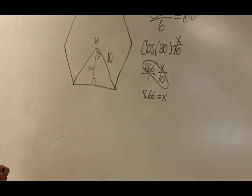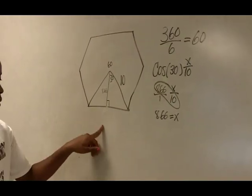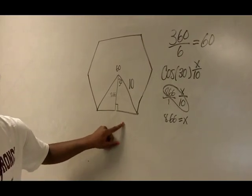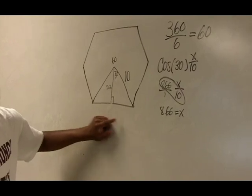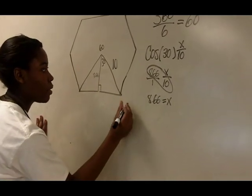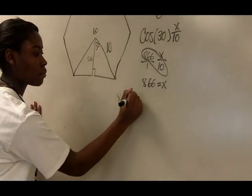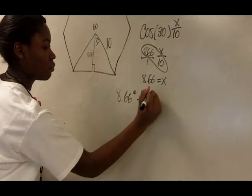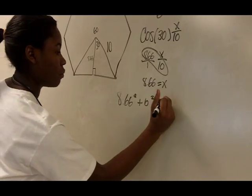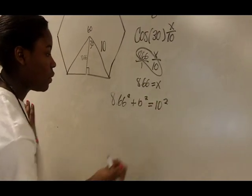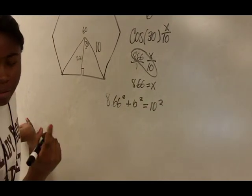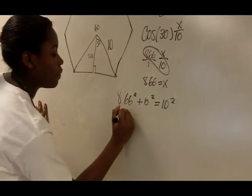Then you can do Pythagorean theorem to find out the last side of it. So you can use that one as a or b, so I'm just going to use it as a. So 8.66 square root is 74.99, so you can just put 75.